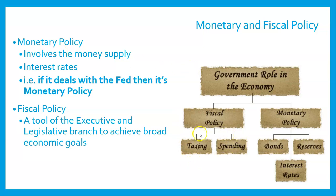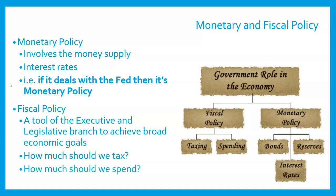Fiscal policy involves taxing and spending. Most of that power is given to the legislative branch, specifically the House of Representatives, which has the power of the purse. But checks and balances are in place because the president has to sign off on the budget. The questions they're trying to answer: how much should we tax, how much should we spend? It's very politically unpopular to raise taxes, but also unpopular to cut spending because people want things from the government. So the government typically spends a lot more than it takes in through taxes, which is why we have a deficit each year that adds to the national debt.